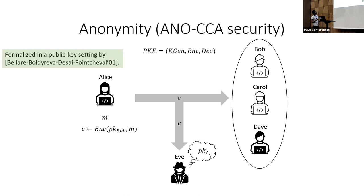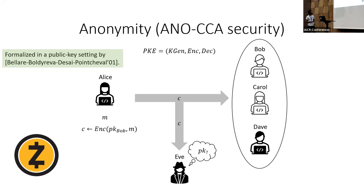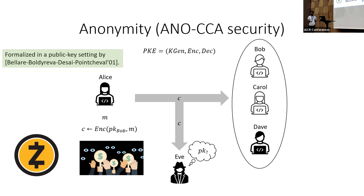Anonymity was formalized by Bellare et al. in 2001 and is pretty much considered to be a standard security notion at this point. It is an important component in different modern applications such as private cryptocurrencies like Zcash — though maybe I should have removed that from my slide after listening to the community's thoughts on cryptocurrencies. But it has other important applications such as digital auctions, anonymous credentials, and others. If your application requires anonymity in some form, then chances are you would require a PKE scheme which satisfies this notion.